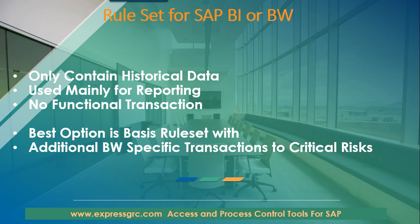One of the things we also have to do is identify some of the sensitive transactions within BW and add them to the critical risk rule set. So if you are asked interview questions about BW and BI, the best option is to select the basis rule set and also add additional BW-related transactions to the critical transactions.